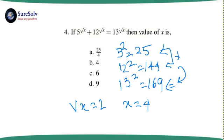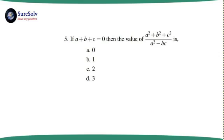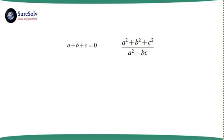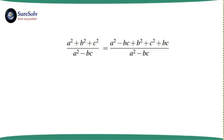The fifth problem: given a + b + c = 0, find the value of (a² + b² + c²) / (a² - bc). The denominator is not similar to the numerator. In these cases, we extract the denominator expression from the numerator step by step. We subtract one bc and add one bc so that the a² - bc expression is formed in the numerator, pulling out a factor of 1, and the remaining fraction numerator becomes b² + c² + bc.